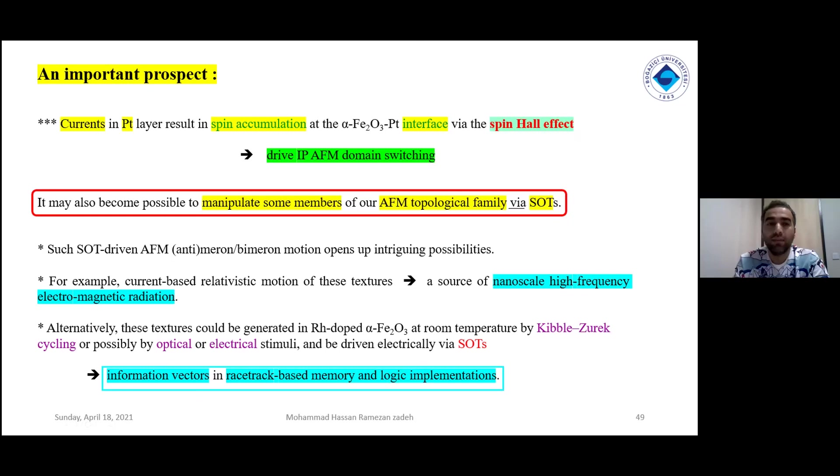At the end, they propose one important prospect. It is using platinum layer. Currents in platinum layer can result in spin accumulation due to spin Hall effect.